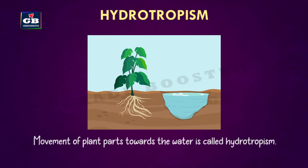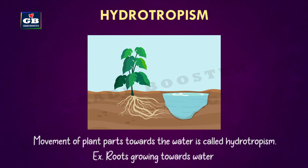Movement of plant parts towards water is called hydrotropism. For example, roots growing towards water.